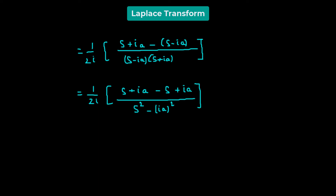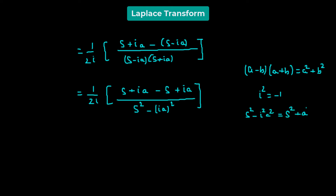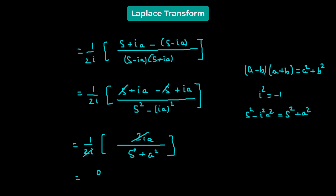Here we have used the identity a minus b times a plus b equals a squared minus b squared. And we know that i squared equals negative 1, so s squared minus i squared a squared gives us s squared plus a squared. The s and negative s in the numerator cancel, leaving 2i·a. Then 2i cancels from both numerator and denominator, and we get the final Laplace transform: the Laplace transform of sine of at equals a over s squared plus a squared.